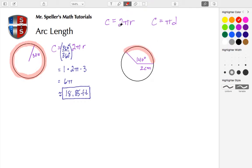So again, we're still going to use this base of 2πR. But we need to make sure that we're multiplying it by the portion of the circle that we're trying to find the arc length of.